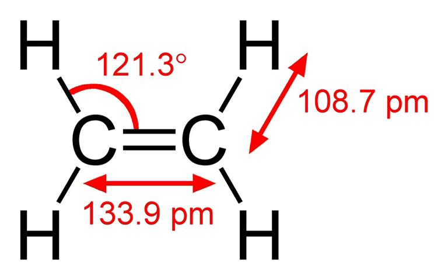Major intermediates from the halogenation and hydrohalogenation of ethylene include ethylene dichloride, ethyl chloride, and ethylene dibromide. The addition of chlorine entails oxychlorination, i.e. chlorine itself is not used. Some products derived from this group are polyvinyl chloride, trichloroethylene, perchloroethylene, methyl chloroform, polyvinylidene chloride and copolymers, and ethyl bromide.